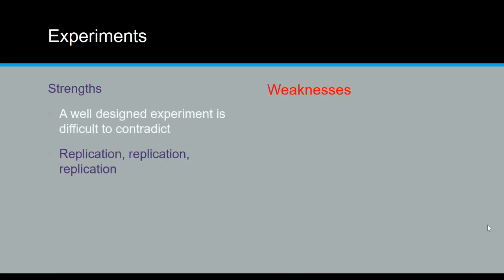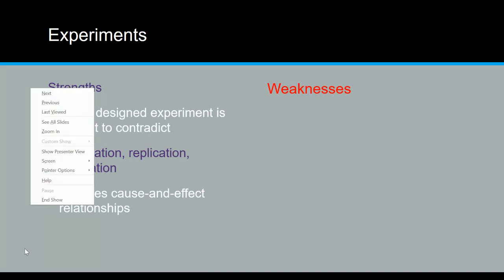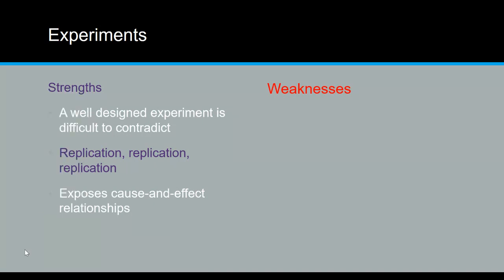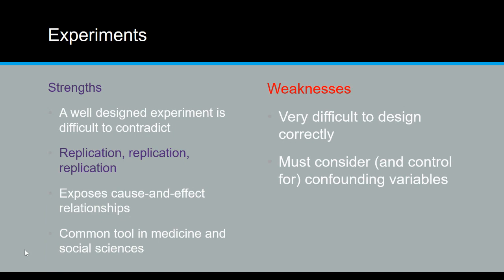Looking at the strengths and weaknesses of experiments: it is difficult to contradict if done well, which is a good strength because the results are strong. It helps find the cause and effect relationship that is difficult to find with just observing, and it is very common in medicine and social sciences. However, it is difficult to design correctly to make it completely accurate, you must consider all the different variables in play, and it can cost a lot of money.